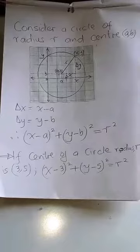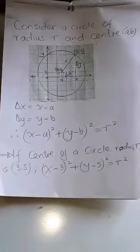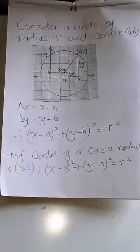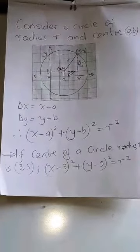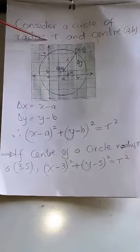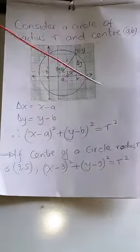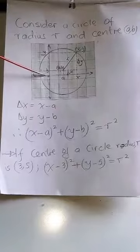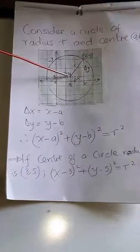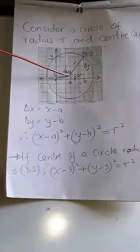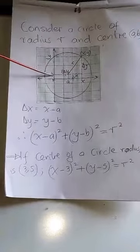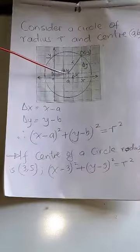Now consider a circle of radius r but with its center at (a, b), where (a, b) represents any coordinates other than (0, 0). On the axes, the center (a, b) has x-coordinate a and y-coordinate b.